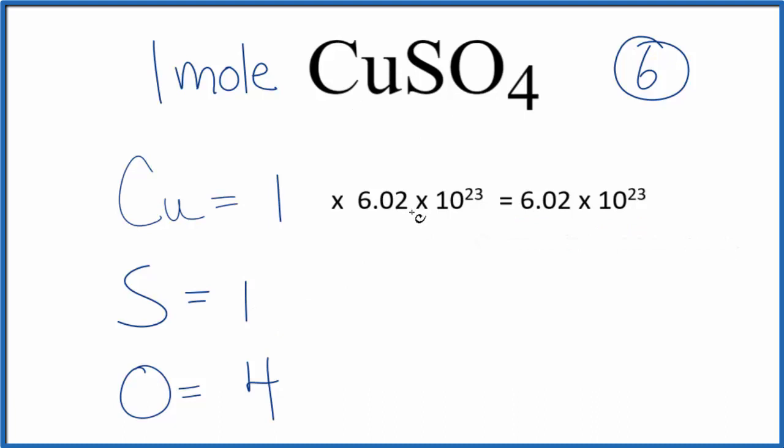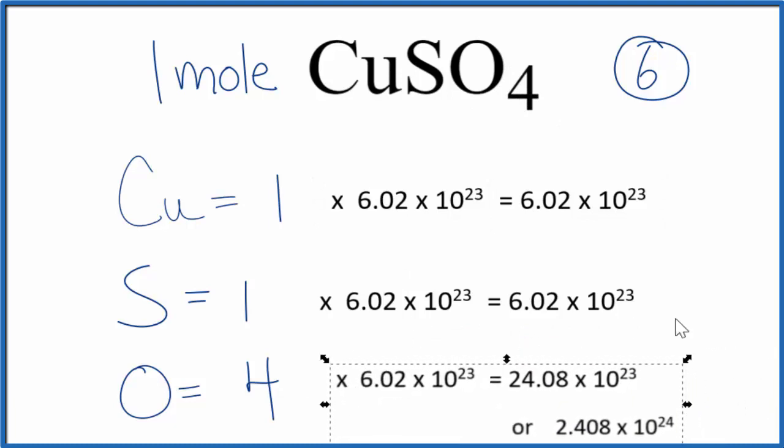Since we only have one sulfur, same thing. For oxygen, we have 4 oxygen atoms here in CuSO4, so we would take 4 and multiply 4 times Avogadro's number, and that would tell us how many oxygen atoms we have in CuSO4.